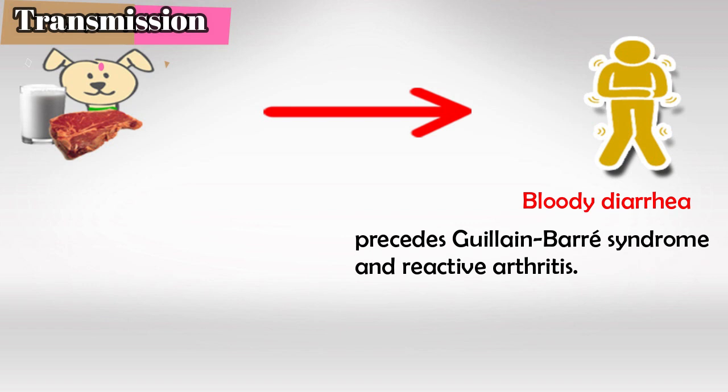The main symptom of Campylobacter infection is bloody diarrhea. It's very important to know that Campylobacter infection usually precedes reactive arthritis and Guillain-Barré syndrome. Meaning, if somebody came in with reactive arthritis or Guillain-Barré syndrome, look in the history and you might find bloody diarrhea, which could indicate Campylobacter infection.